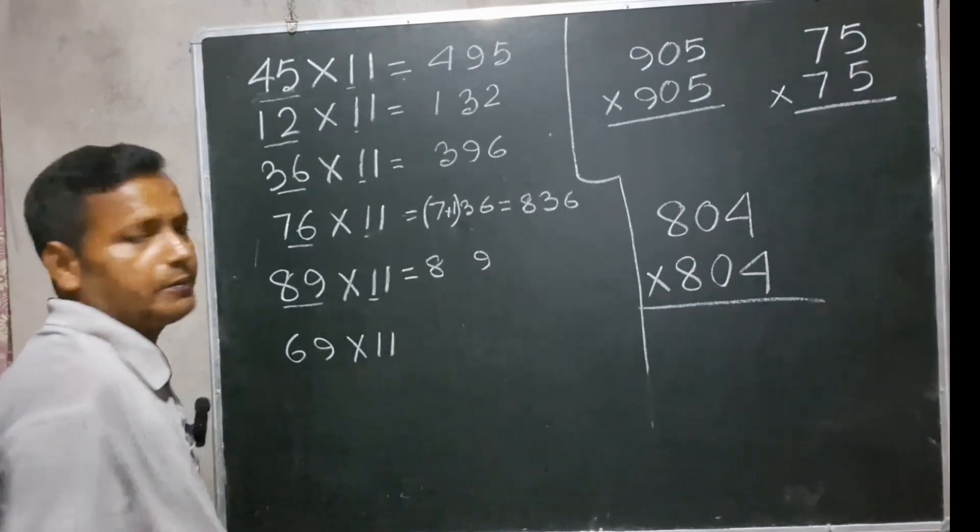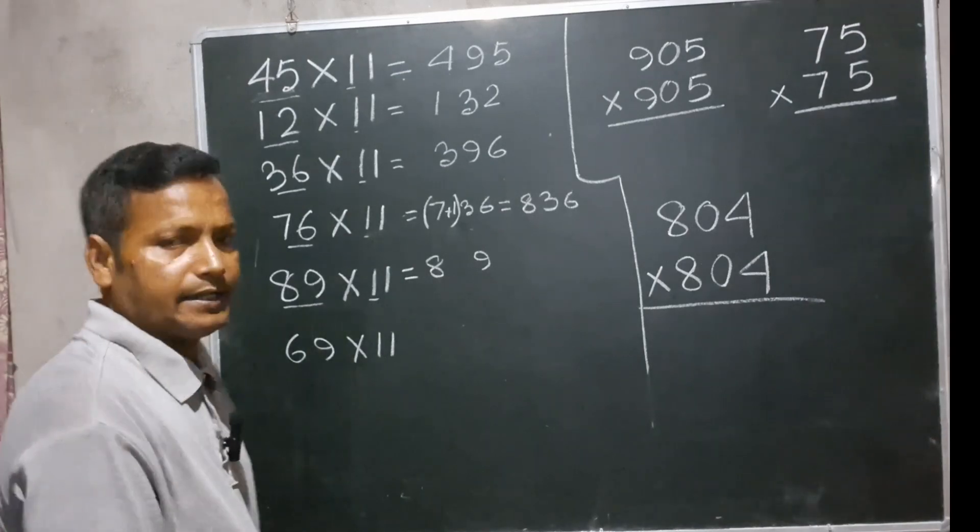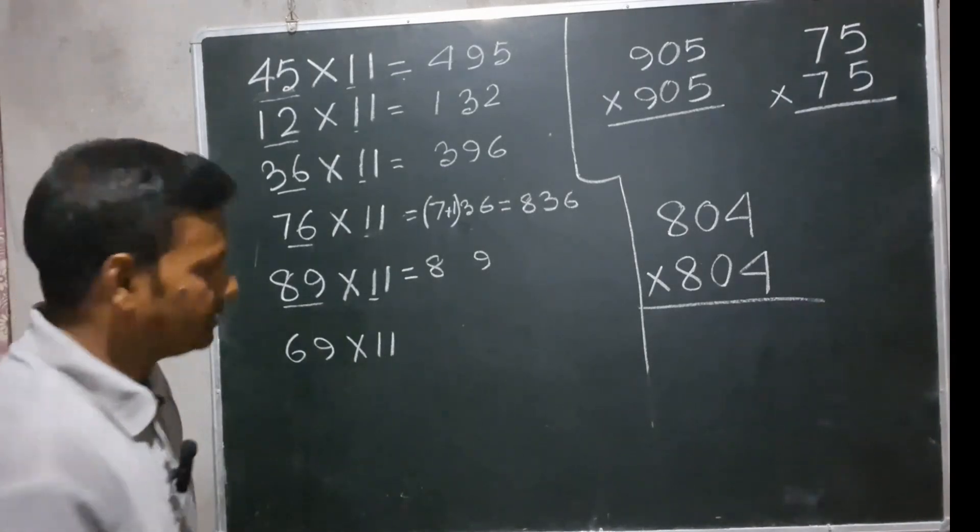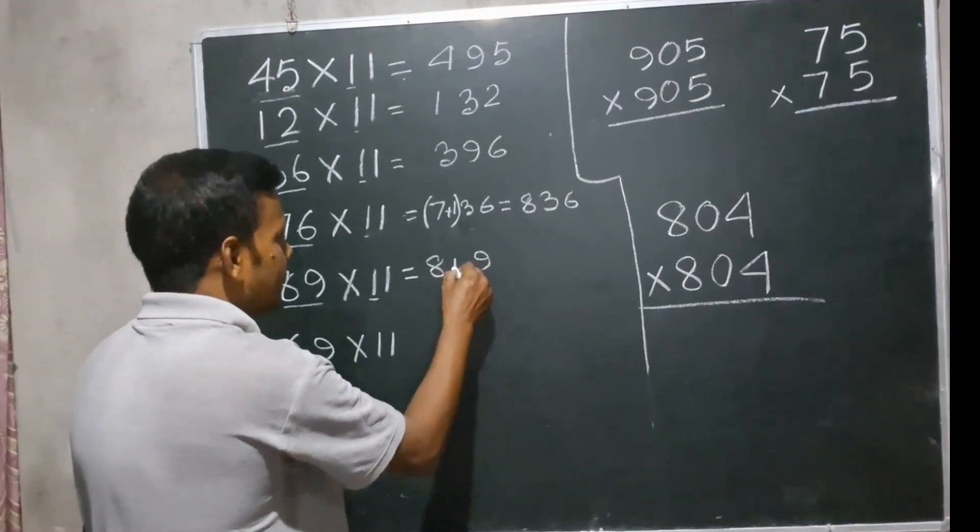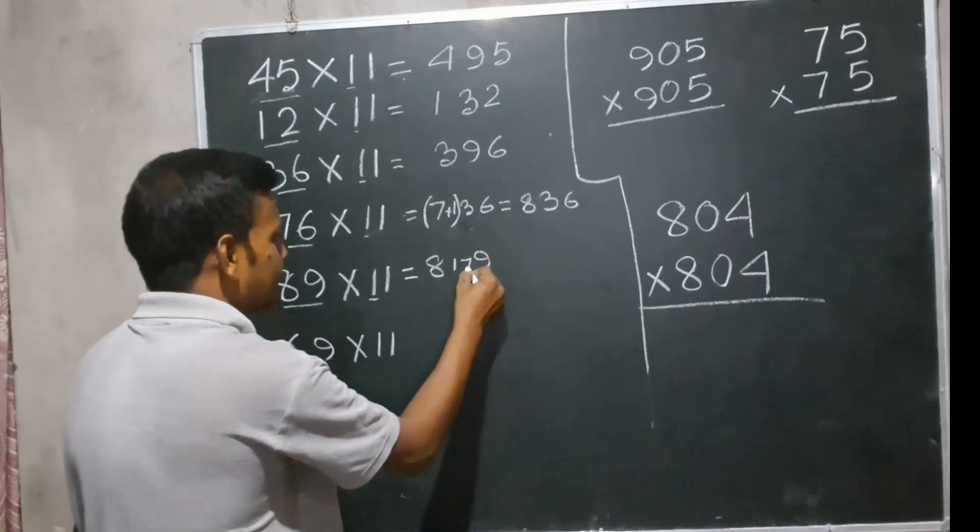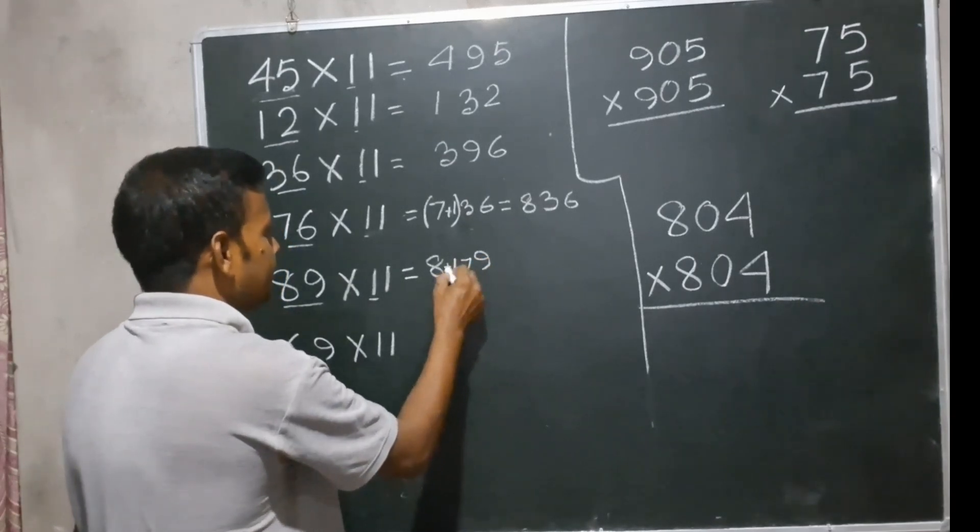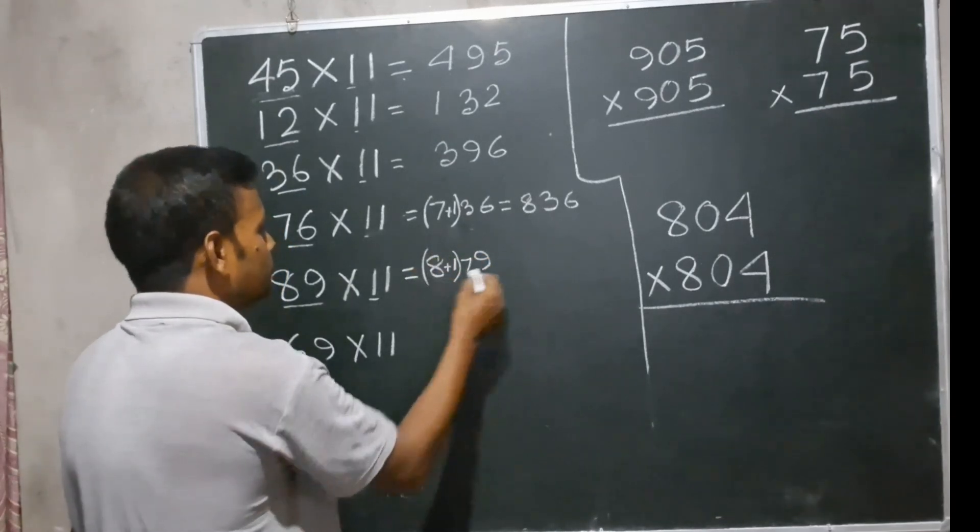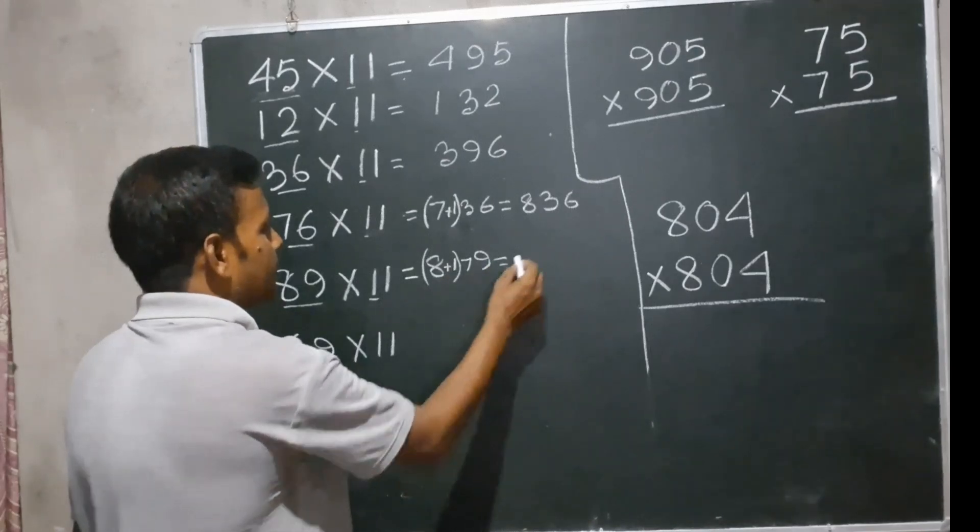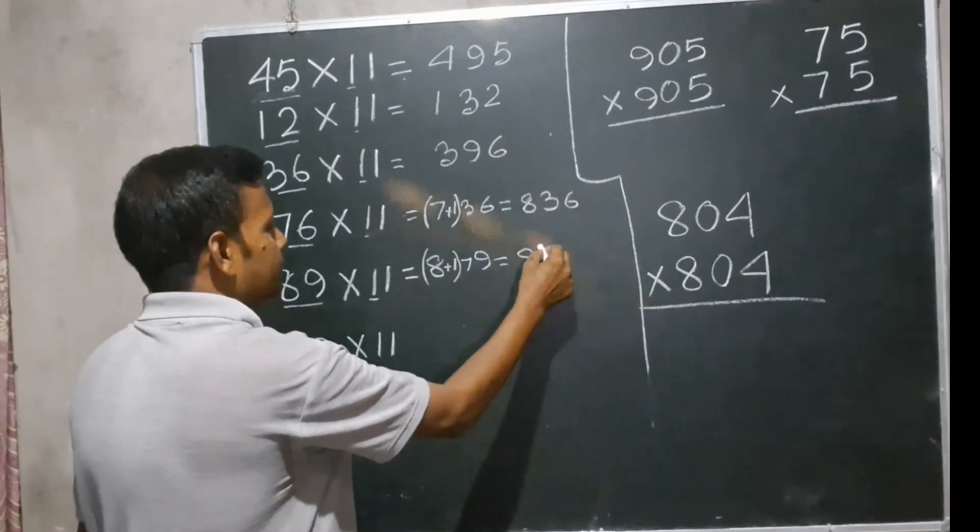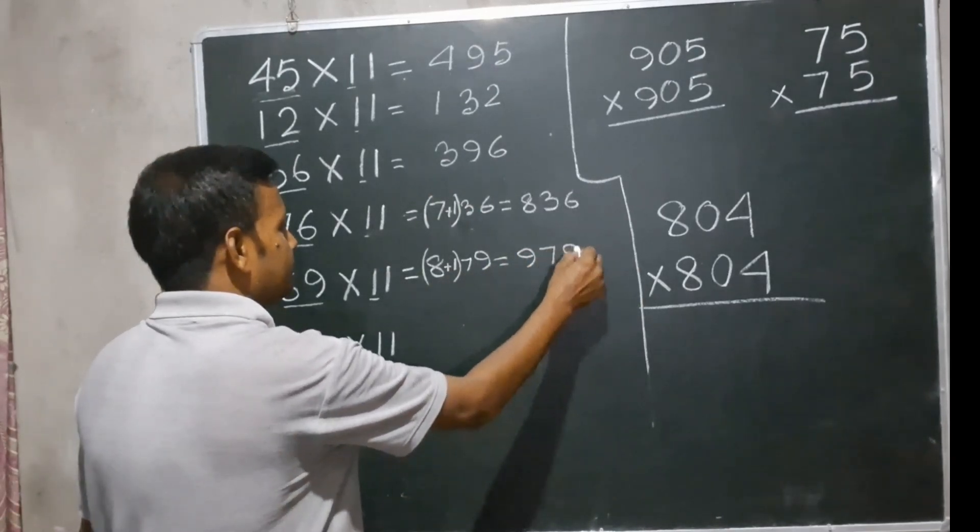We have to add 8 and 9, which equals 17. Write 1 with 8 to get 9, giving us 979. Now 69 into 11.